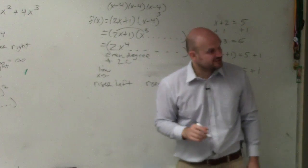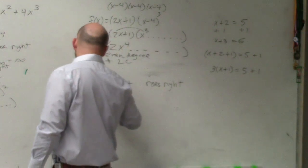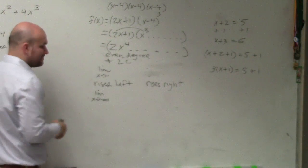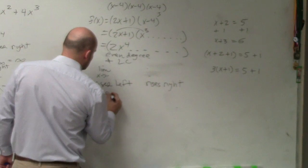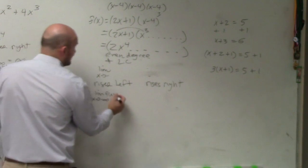However, using limit notation, how would we write that? Well, rises left means the limit as x goes to the left, which is negative infinity of our function f of x. Since it's rising, should it go to infinity or negative infinity? Infinity.